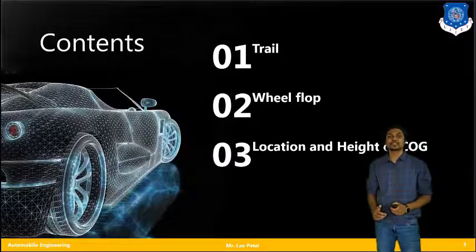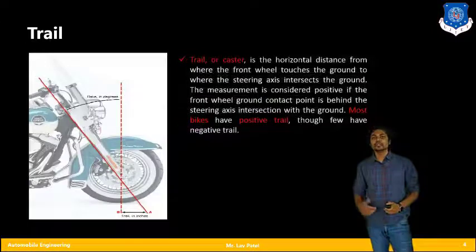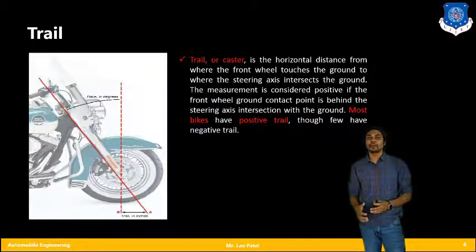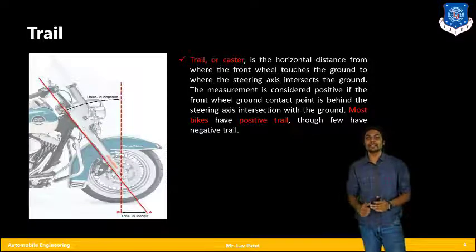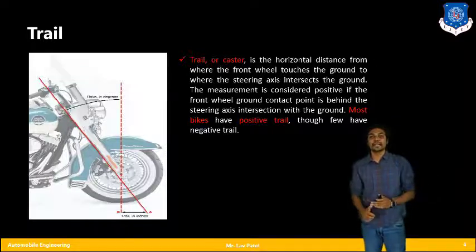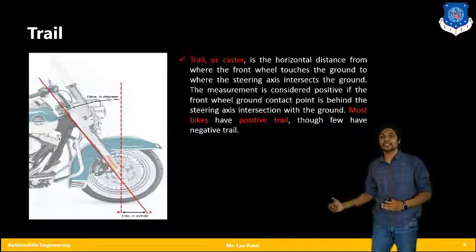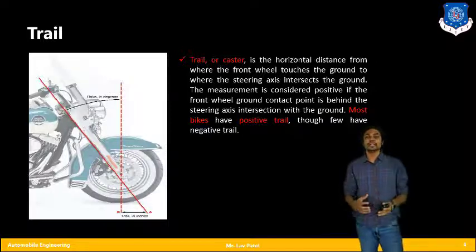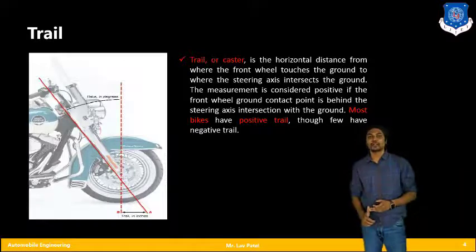Let us begin with the first topic: trail. Trail, or castor, is the horizontal distance from where the front wheel touches the ground to where the steering axis intersects the ground. This angle we have already called the rake angle, and that particular distance is called trail. Basically, the driver's balance or stability of the vehicle is going to be affected by this parameter called trail.